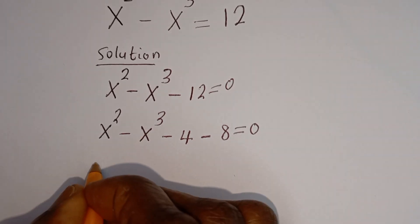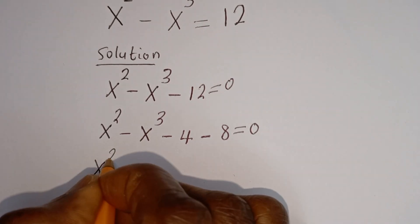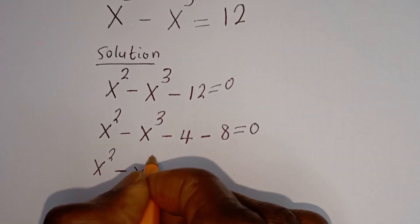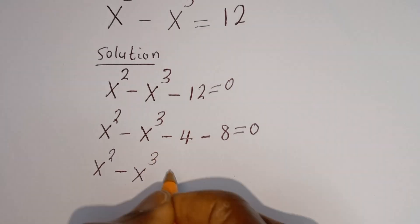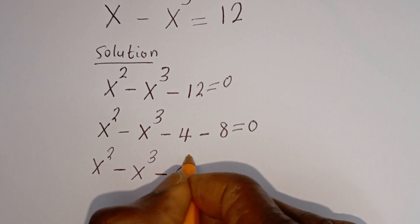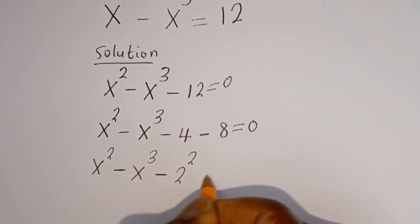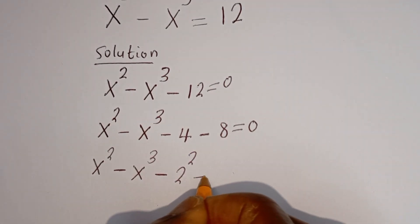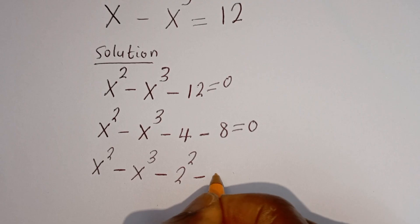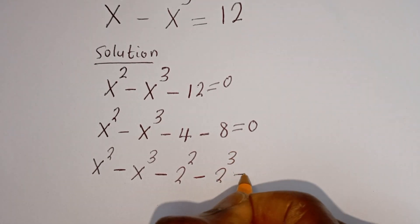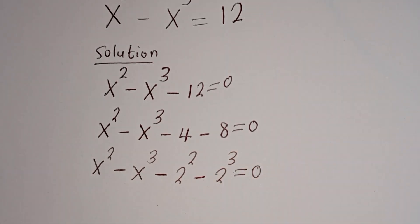Then we have S squared minus S to the power of 3. Minus 4 can be written as minus 2 squared. Then minus 8 can be written as minus 2 to the power of 3, is equal to 0.